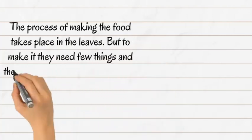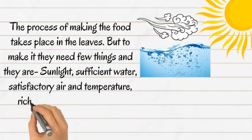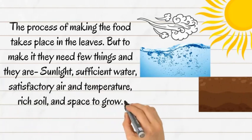The process of making food takes place in the leaves, but to make it they need a few things: sunlight, sufficient water, satisfactory air and temperature, rich soil, and space to grow.